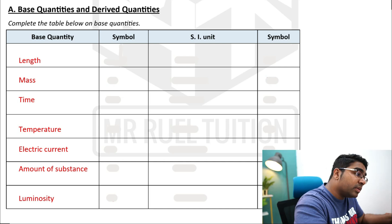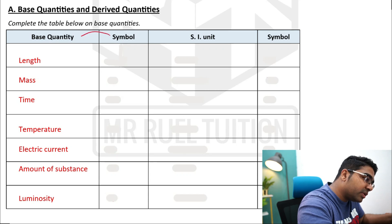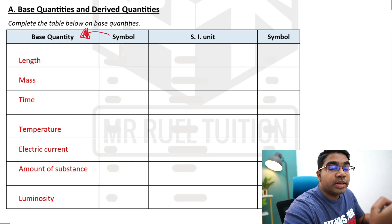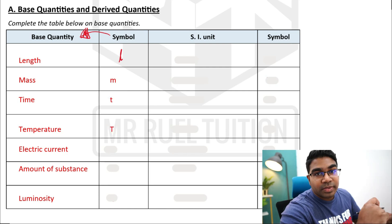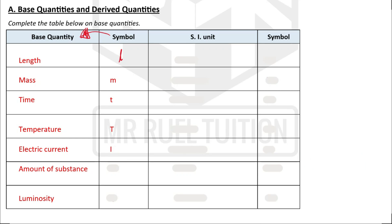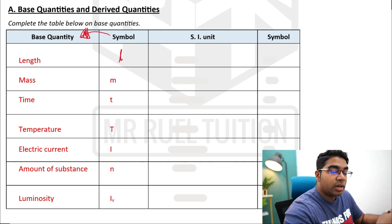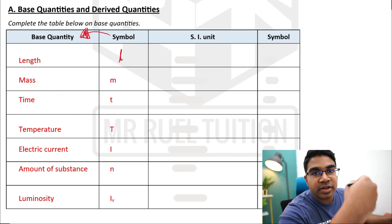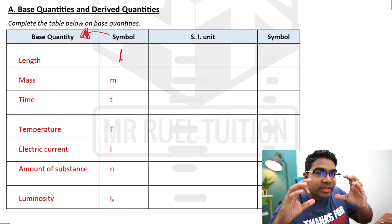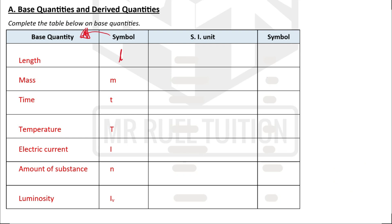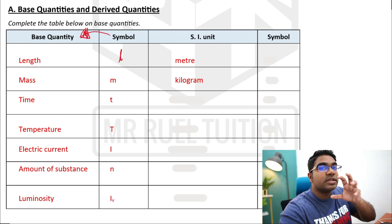It's important to remember the symbols for the base quantities. The symbol for length is L, mass is M, time is small t, temperature is capital T — the capitalization matters here. Electrical current is capital I, amount of substance is N, and luminosity is I subscript V. These quantities can have various units, and so we have something called the SI unit, which is set as the standard unit. The SI unit for length is meter, for mass is kilograms.